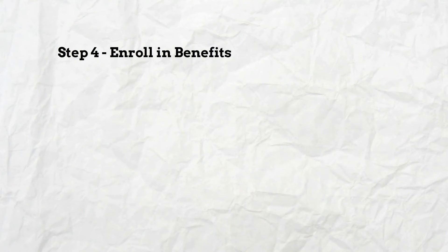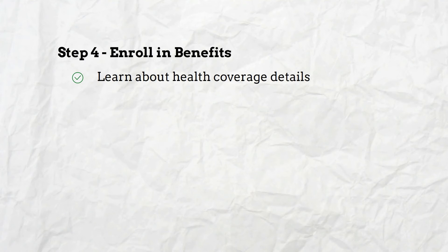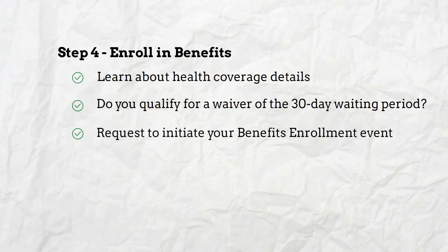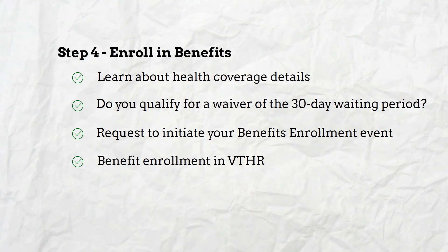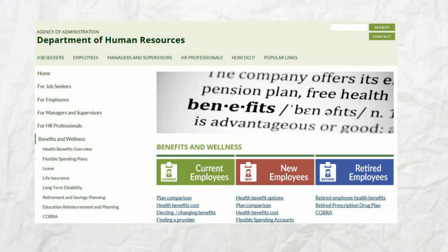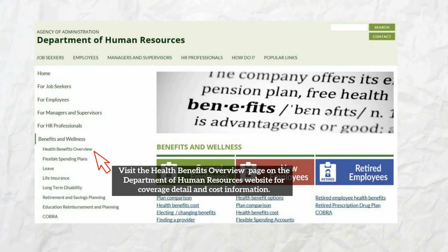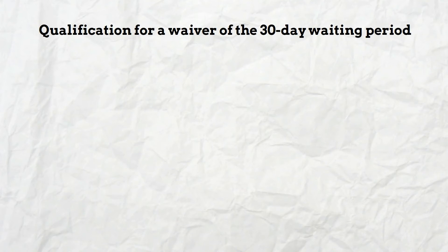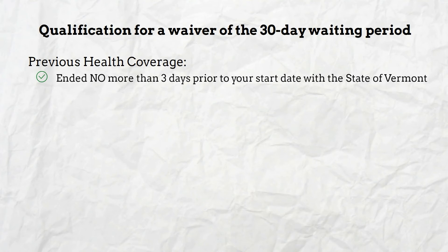In step four, we will discuss how to enroll you and your family in health and dental benefits. There are a few items to consider prior to the enrollment process in VTHR. To learn about the different types of coverage and the associated costs, visit the Department of Human Resources website. Also make sure you've watched the health benefits overview video.